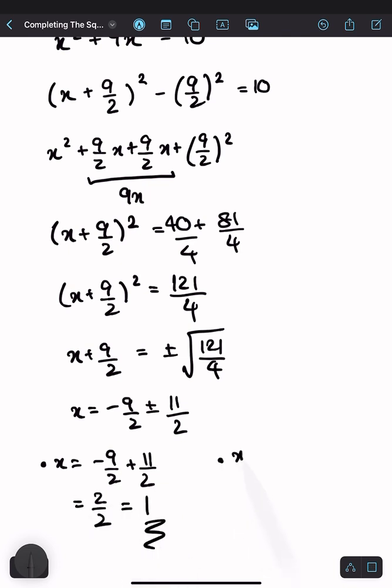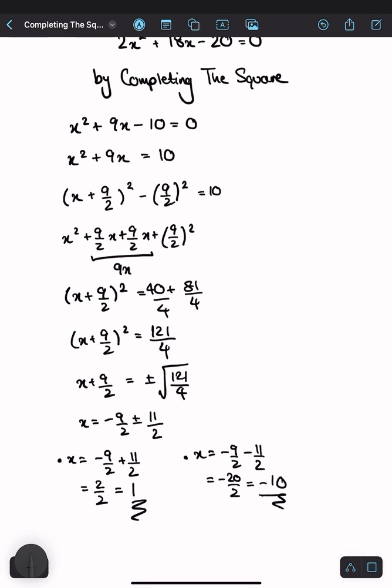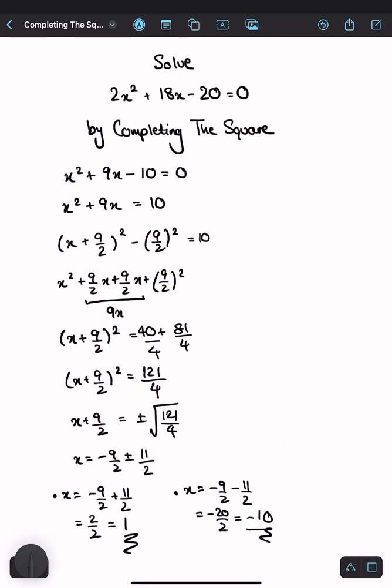Or, x is equal to minus 9 over 2 minus 11 over 2, which equals minus 20 over 2, which equals minus 10. And these are our two solutions to this equation.